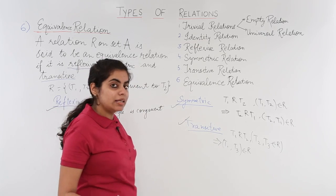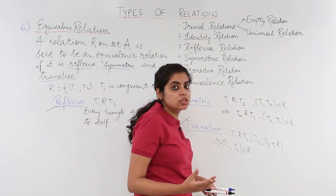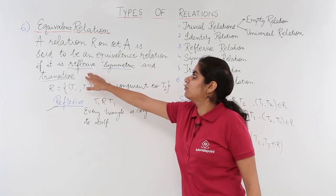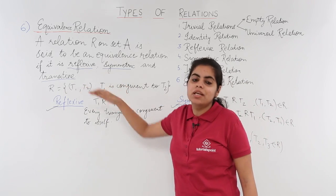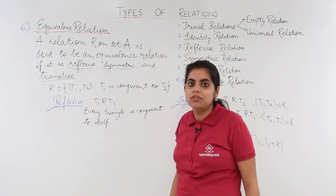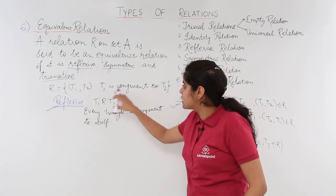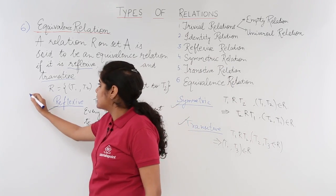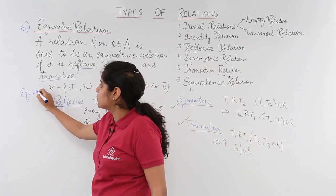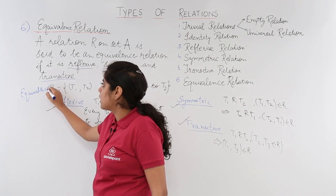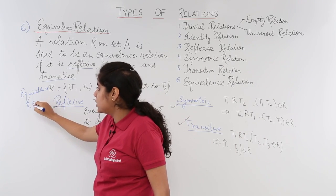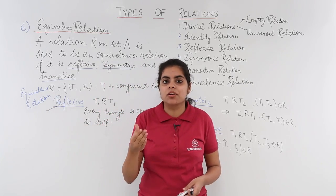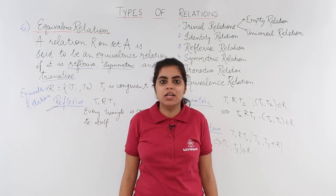So for the congruency relation, we know that it is reflexive, it is symmetric, and it is transitive — and because it is all three, it is an example of an equivalence relation. Any relation is an equivalence relation when it is reflexive, symmetric, and transitive.